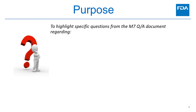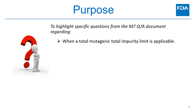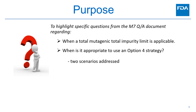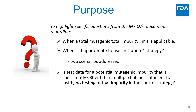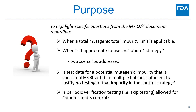The purpose of this poster is to highlight specific questions from the ICH M7 Q&A document regarding: when a total mutagenic impurity limit is applicable; when it is appropriate to use an Option 4 strategy — with two scenarios addressing different aspects of this question; whether test data for a potential mutagenic impurity consistently less than 30% TTC in multiple batches is sufficient to justify no testing in the control strategy; and finally, whether periodic verification testing (i.e., skip testing) is allowed for Option 2 and 3 control.